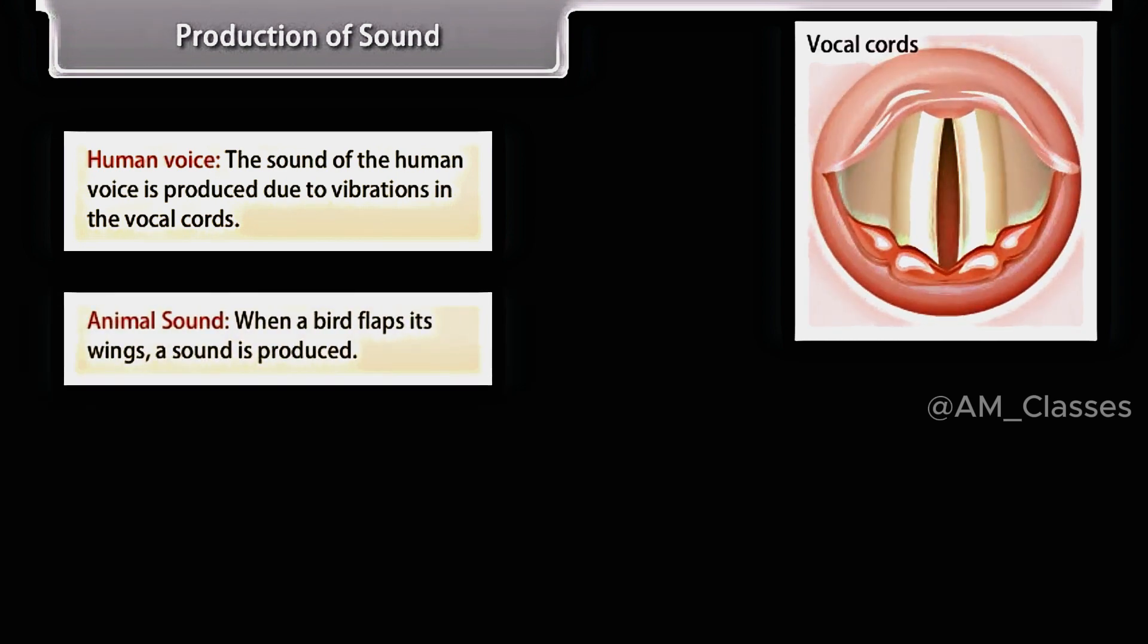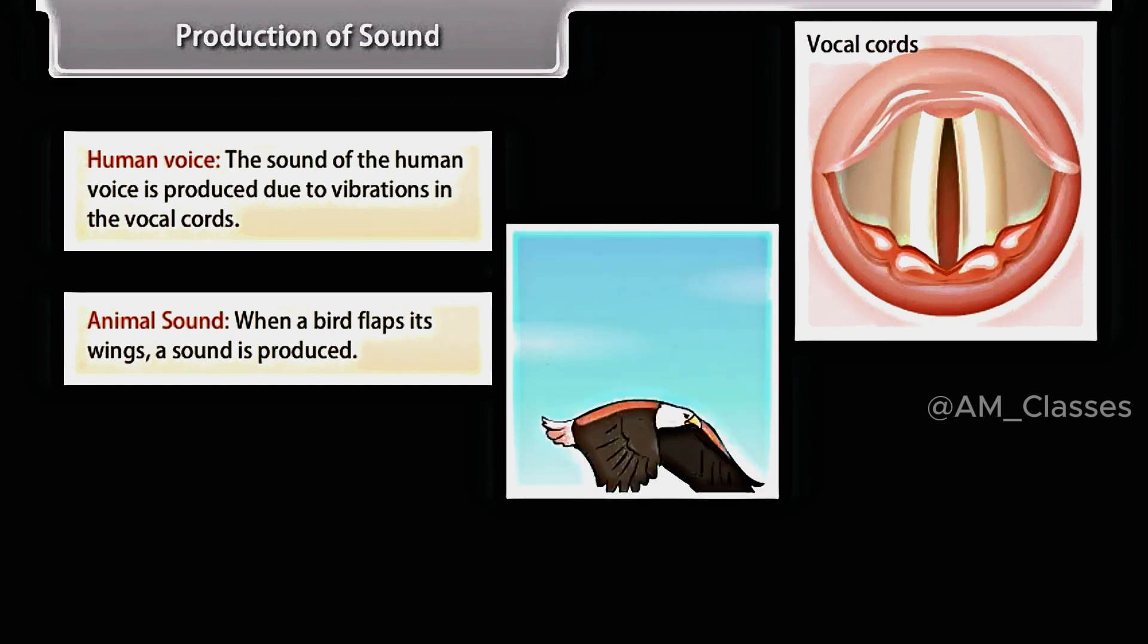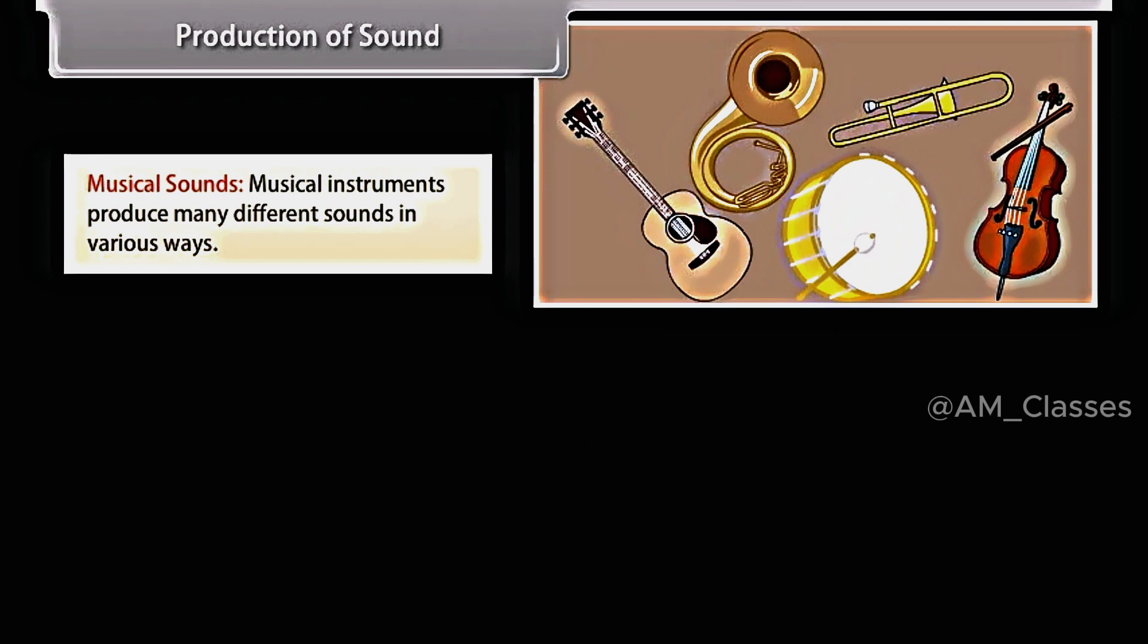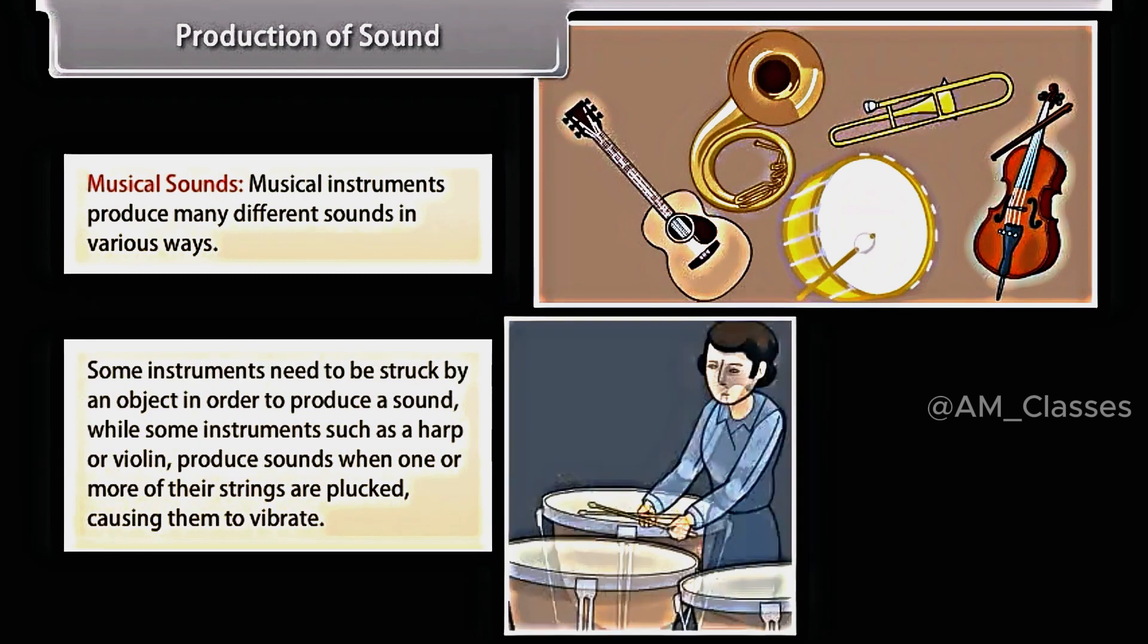Animal sound. When a bird flaps its wings, a sound is produced. These buzz as they fly because of the rapid movement of their wings. Their wings make the air vibrate, producing a buzzing sound.